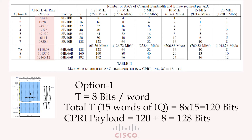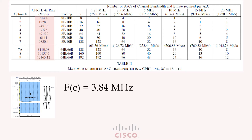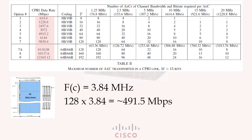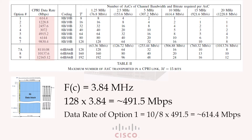We know that sampling frequency FC equals 3.84 megahertz per bit of data. To sample 128 bits of IQ data, the data rate is 3.84 multiplied by 128, which is 491.5 Mbps. Considering the CPRI data is encoded before sending and we use 8b/10b encoding, for CPRI option 1 the resultant line rate is 614.4 Mbps.